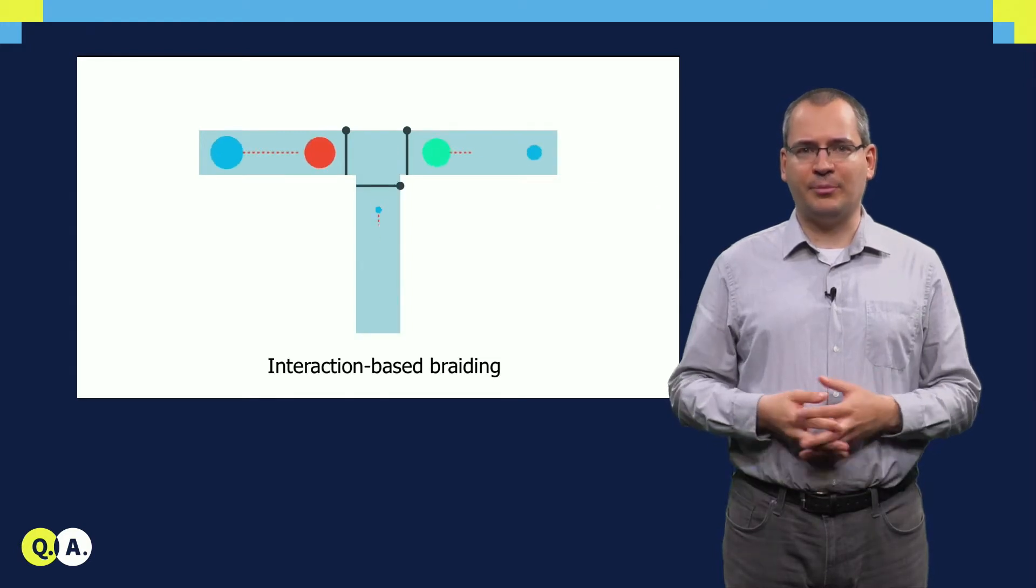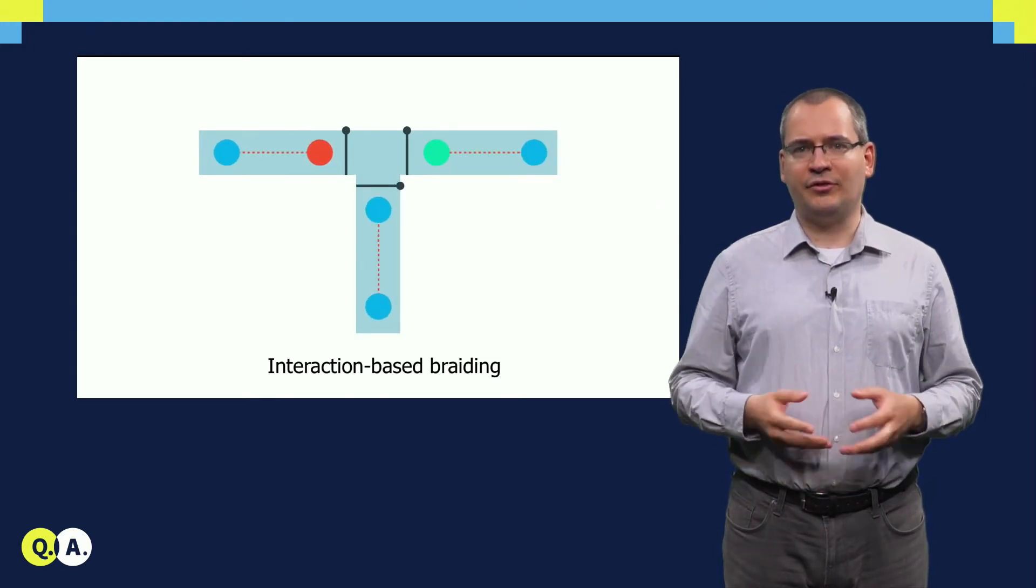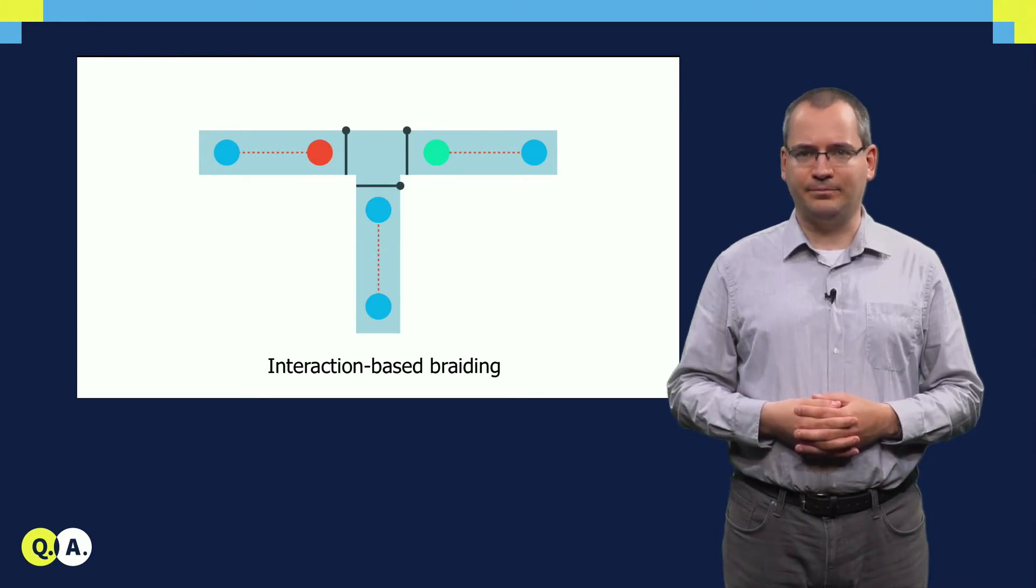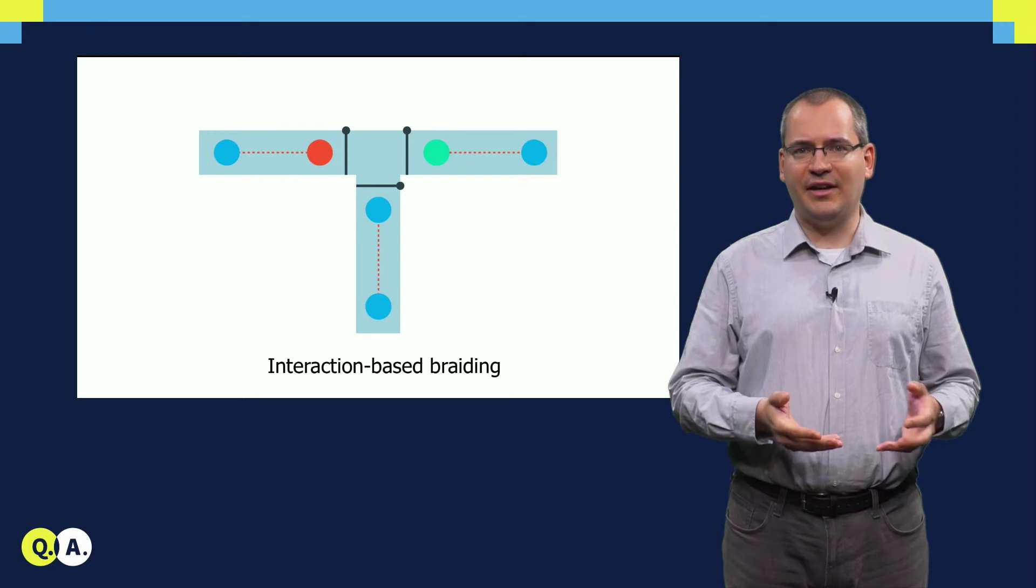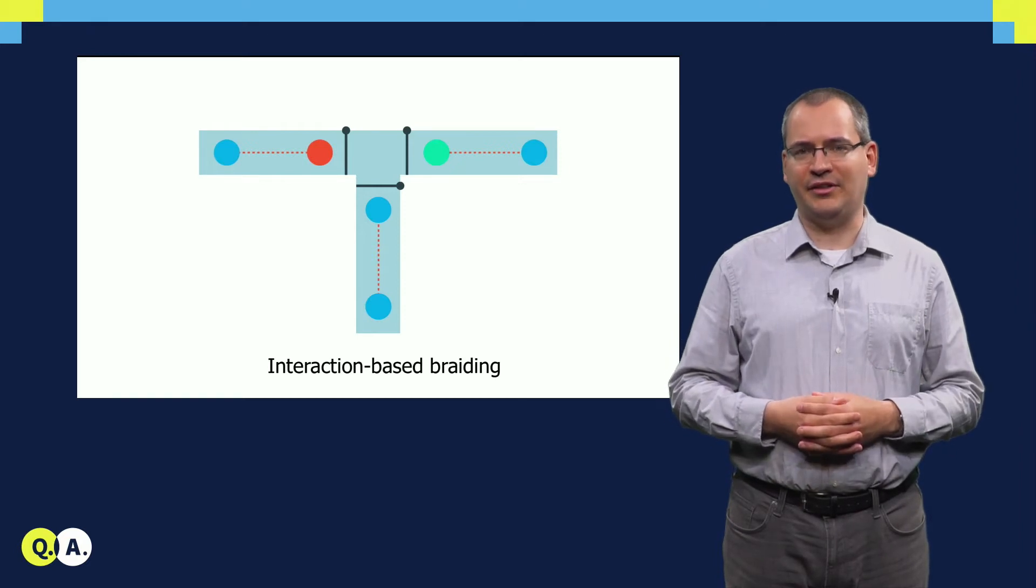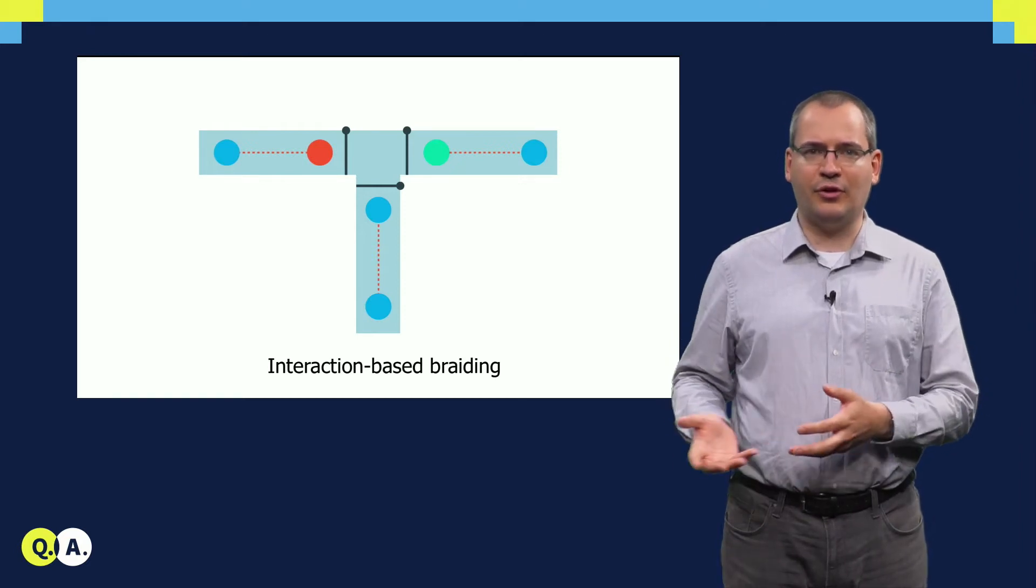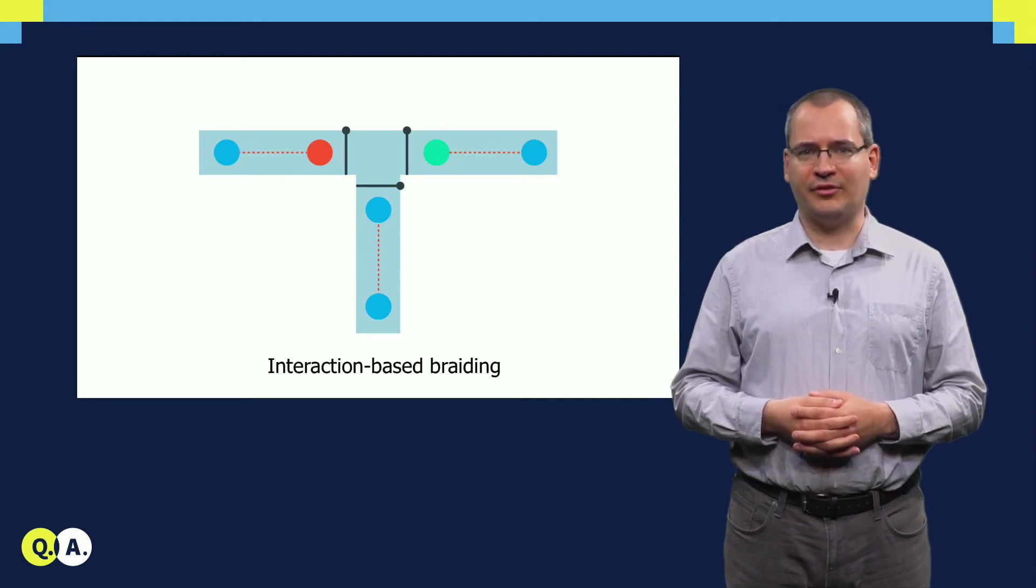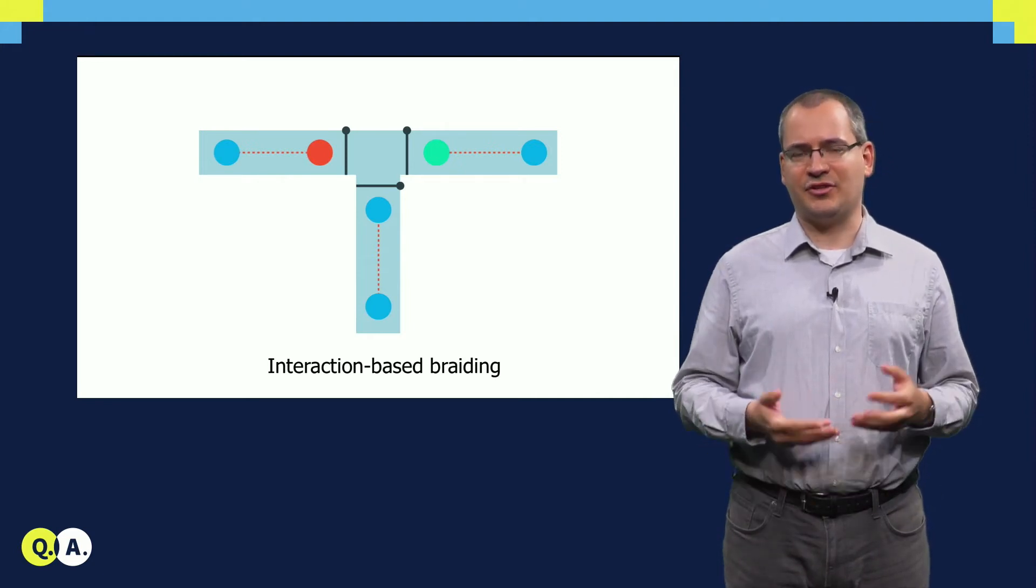We can also use this concept to perform braiding, so that we need not physically move the Majorana states, just like we did before. We start from a T-device with a pair of Majoranas in each segment. With three valves, we can control the coupling between each pair of topological segments, enabling interaction-based braiding.